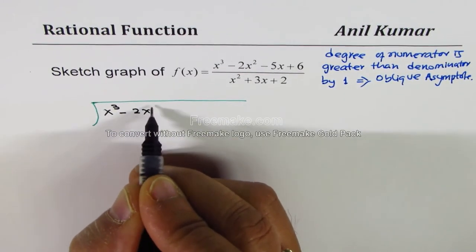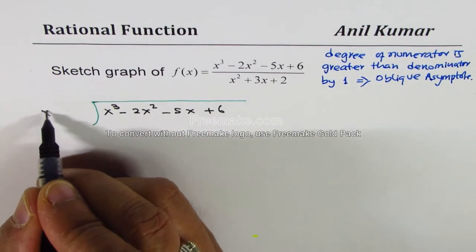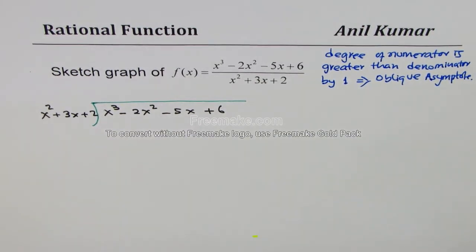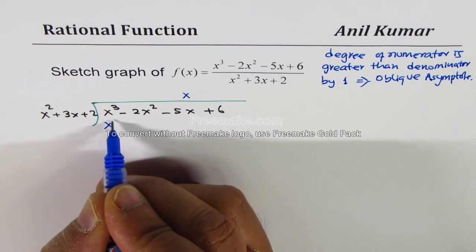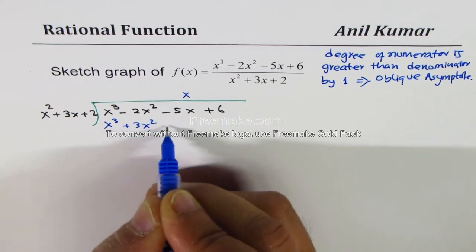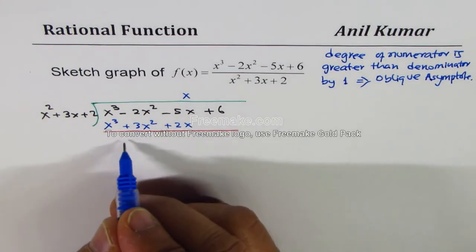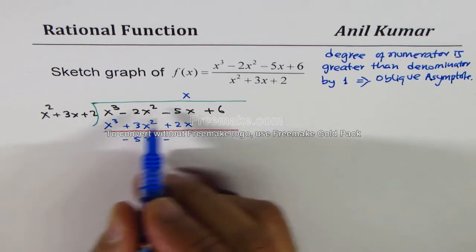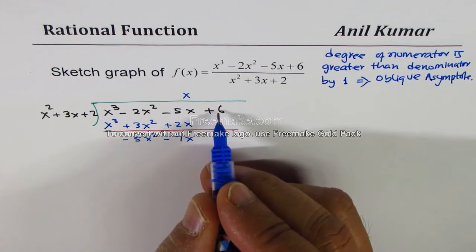We have 2x³ - 2x² - 5x + 6 and we're going to divide this by the quadratic function x² + 3x + 2. So x goes in: x times gives us x³ + 3x² + 2x. When you subtract, you get -5x² and then minus 7x, bringing down +6.